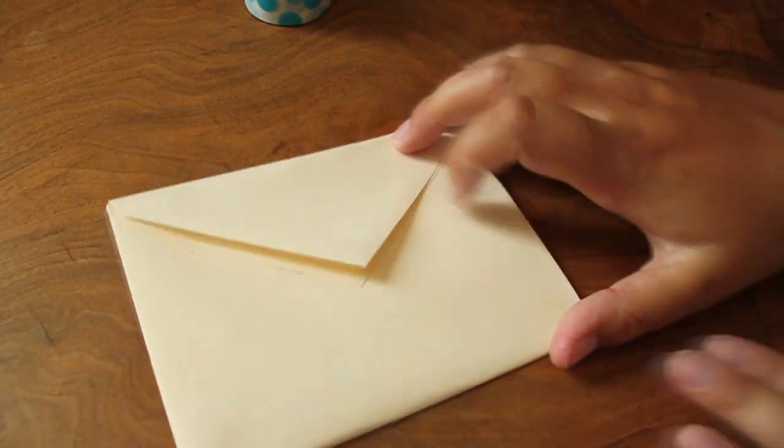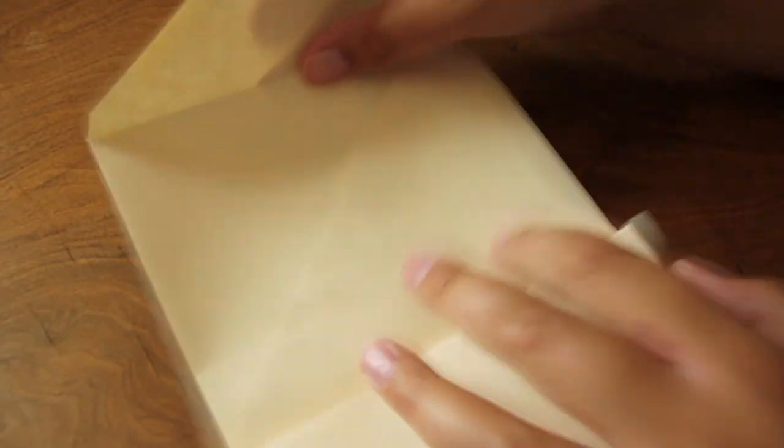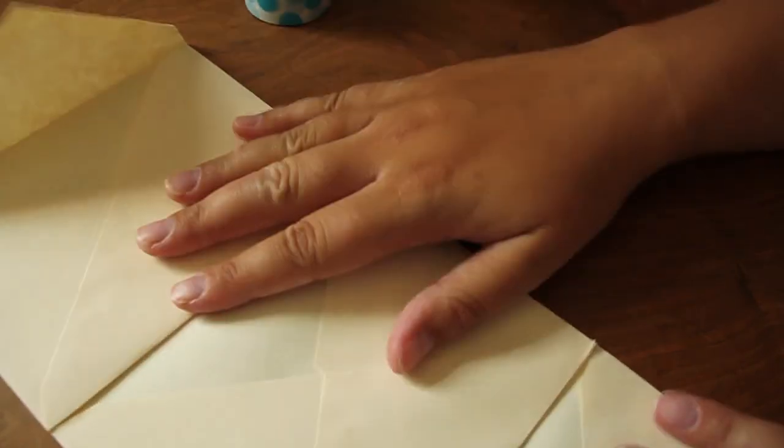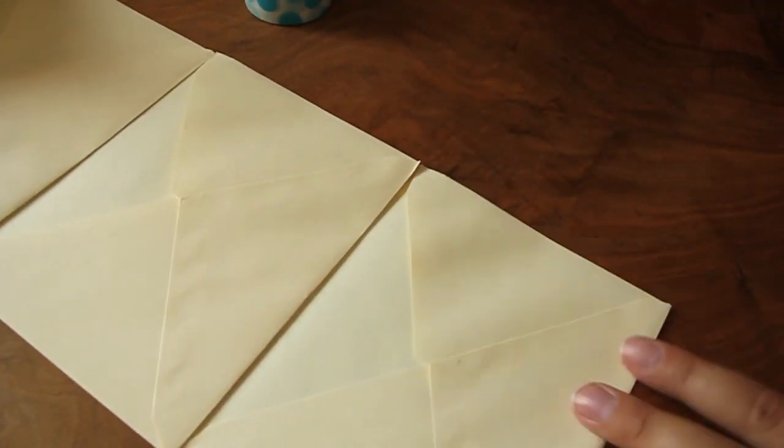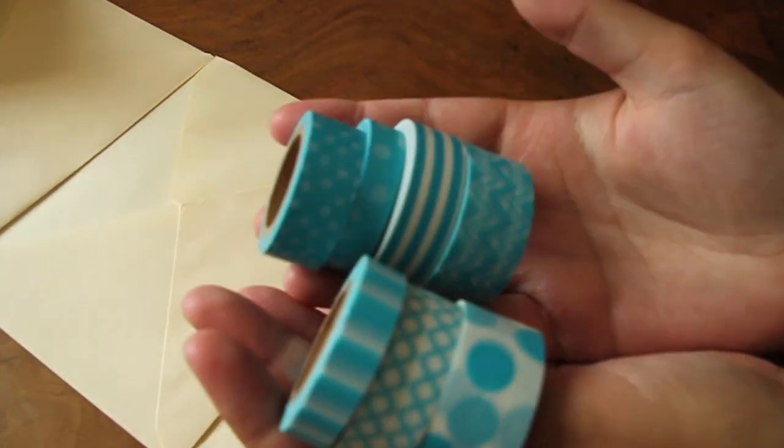When you fold it like this, you will have one envelope you can easily send in another envelope. Now you can start decorating. I use these blue washi tapes. I really like them because they are all matching in different sizes.